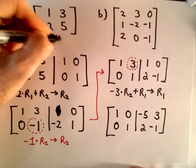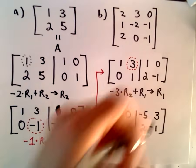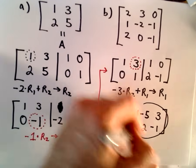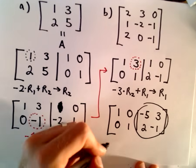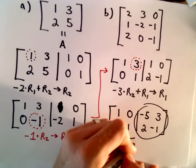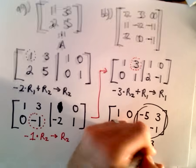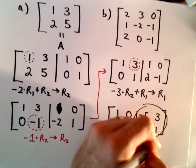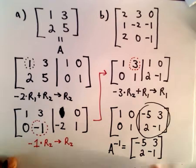So, if we call this matrix that we started with here, matrix A, again, what we now have on the right side, since we have the identity on the left, that's going to be our inverse matrix. So, it says our inverse matrix will have entries negative 5, positive 3, 2, and negative 1.